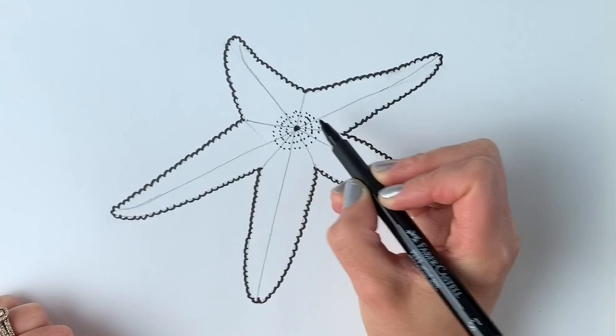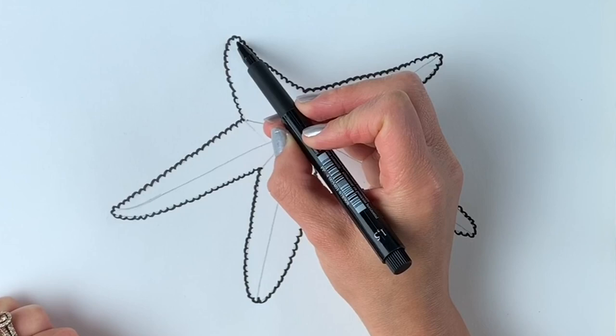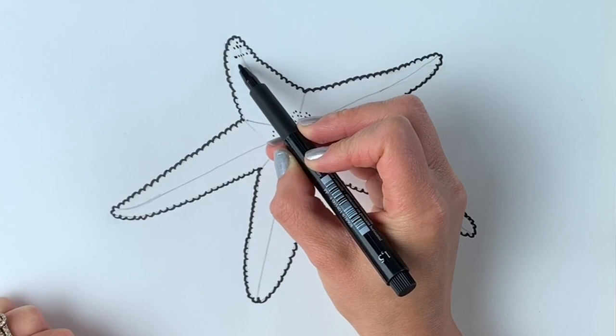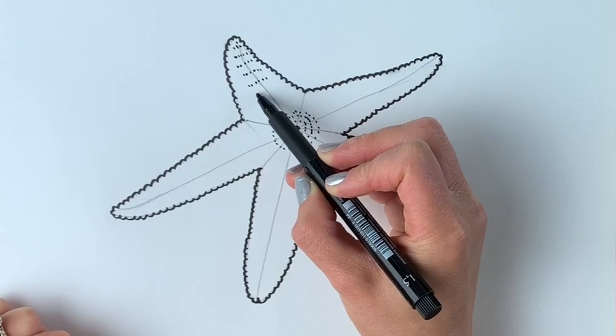Now we're going to do little clusters of dots. So starting from the tips we're just going to do lots of little dots. Just going in a line, just crossing this center line that we did in pencil.